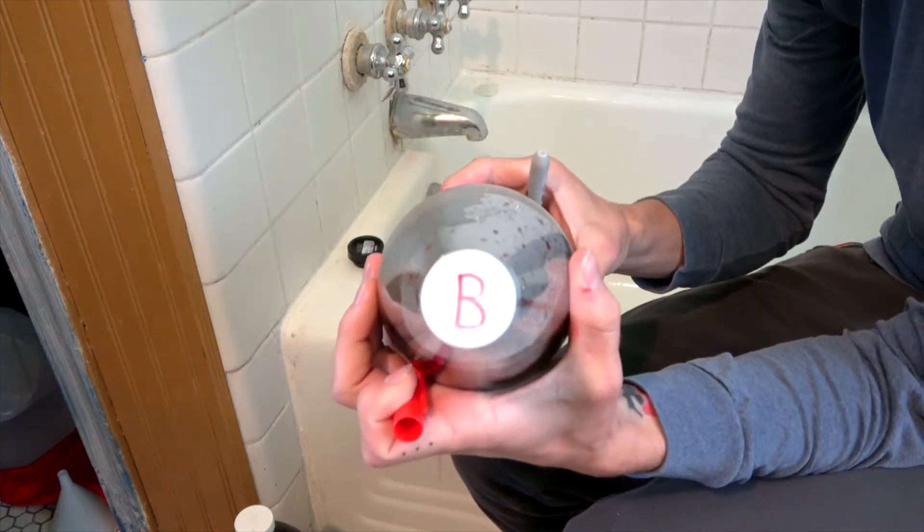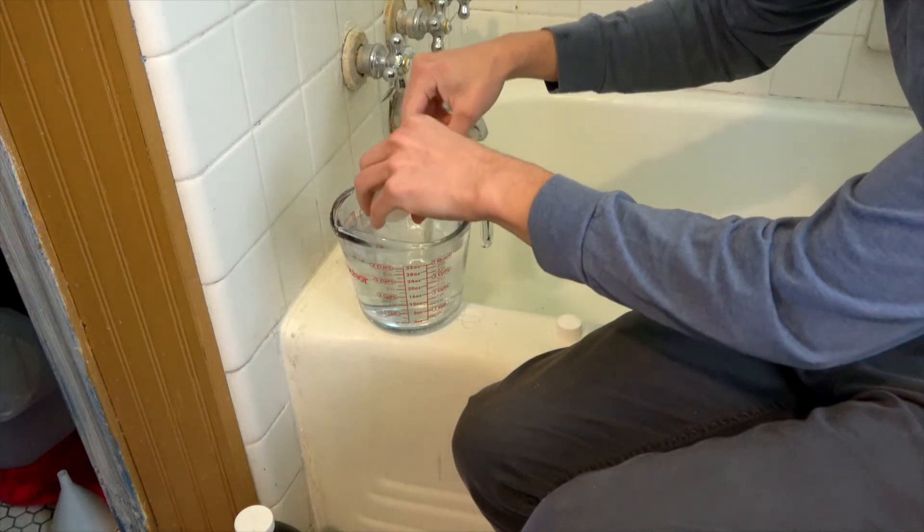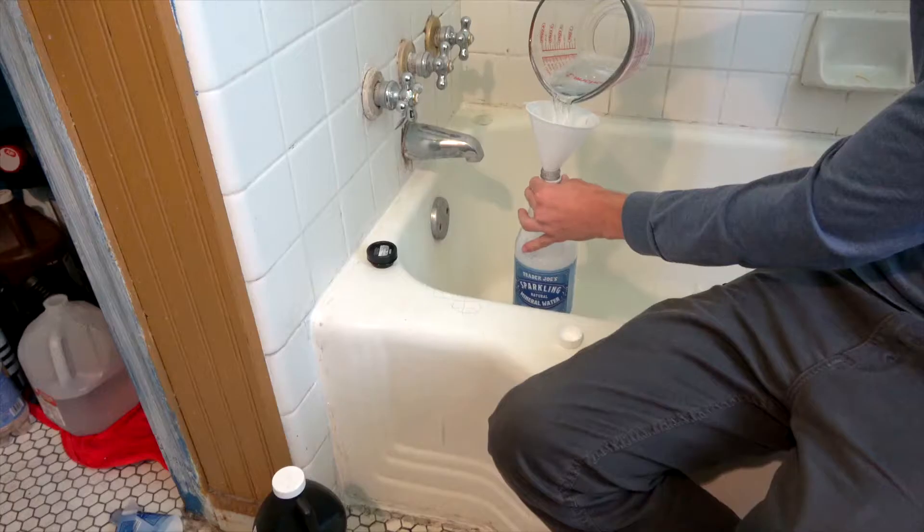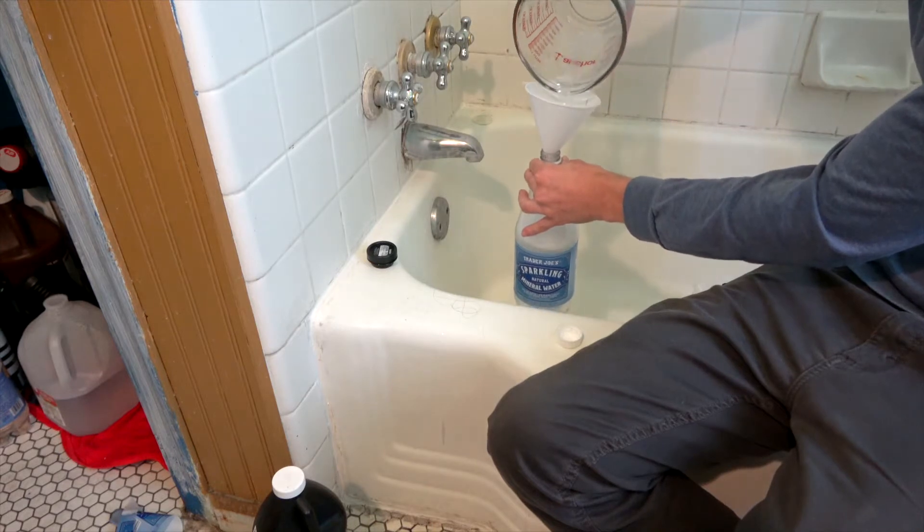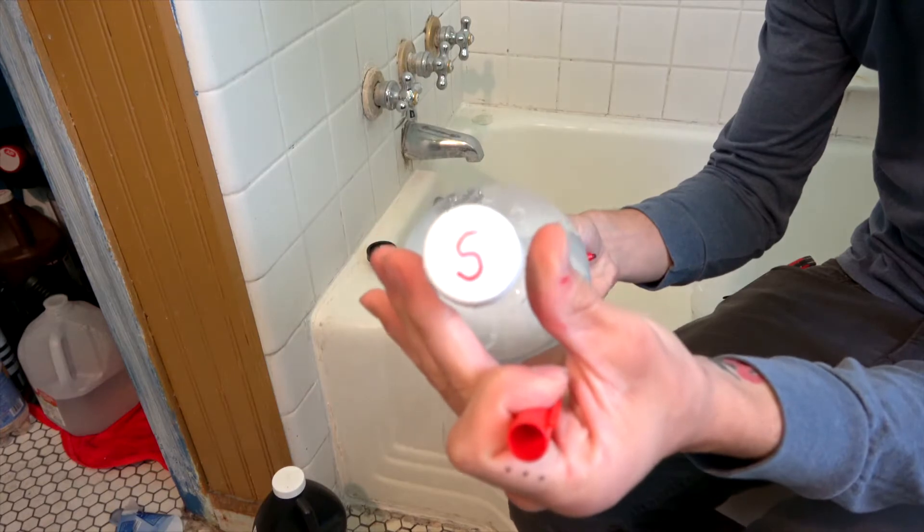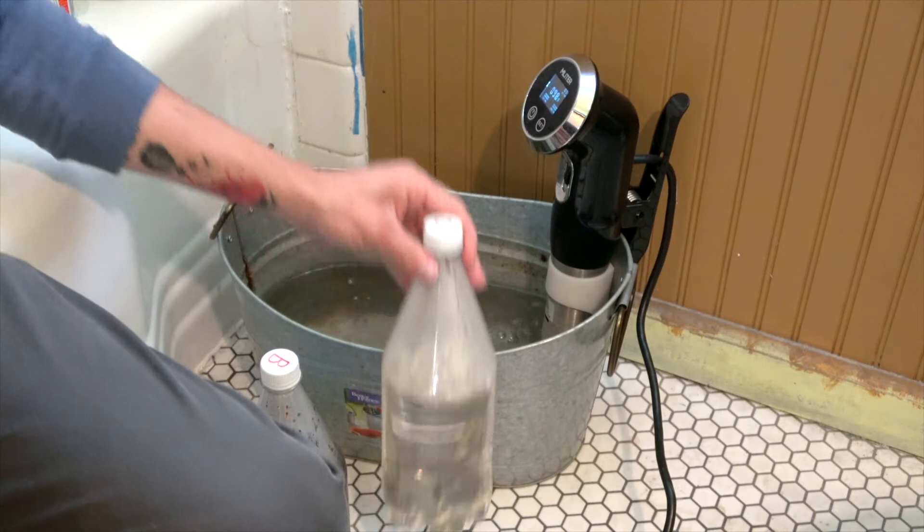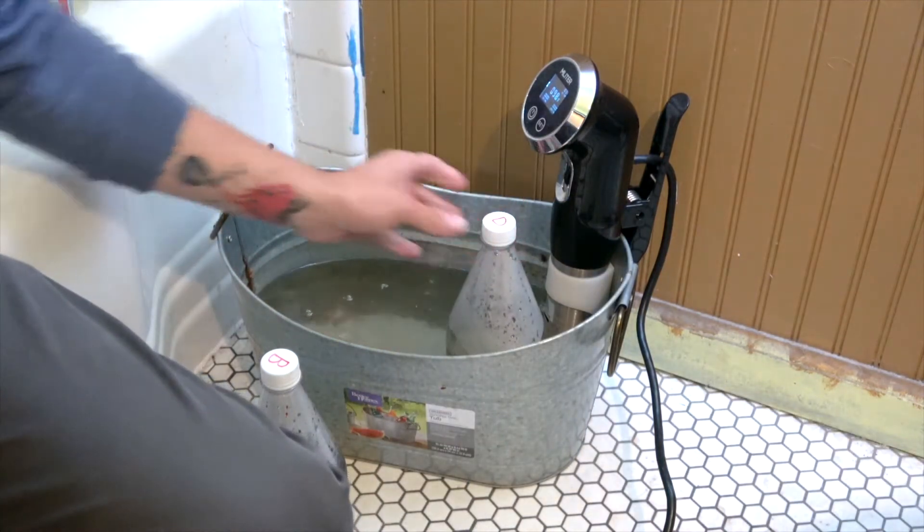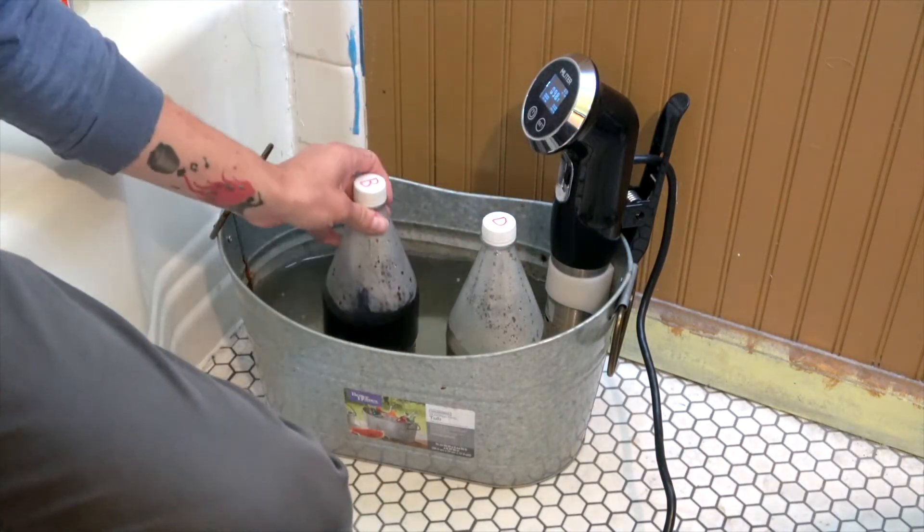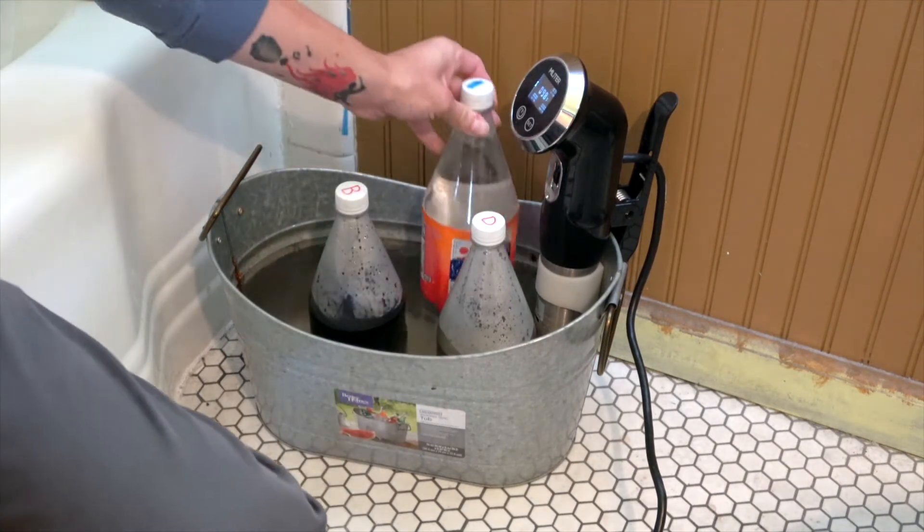The next step is mixing up our stabilizer. This one just goes into room temperature water and then pour it into your bottle. Mark it with an S so that you know it's your stabilizer. Next up, we'll turn on our sous vide and we'll heat it up to 102 degrees by putting our bottles into our bucket of water. I also keep a bottle of water for my pre-wash, and that also goes in the bucket so that I have pre-wash water that is at the proper temperature.